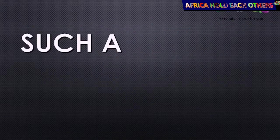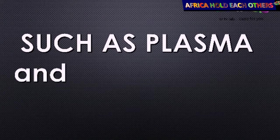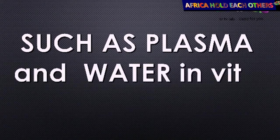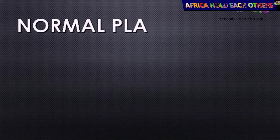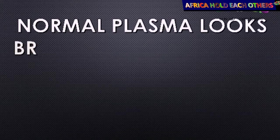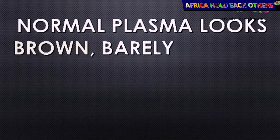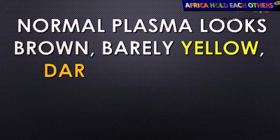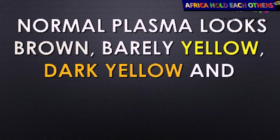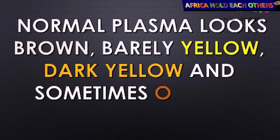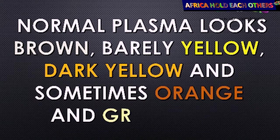Those fluids are like plasma and water when it is done in vitro. The normal plasma actually looks like brown, barely yellow, dark yellow, and sometimes orange and green.